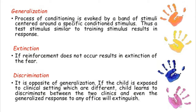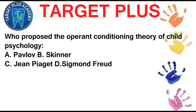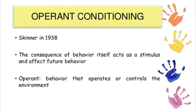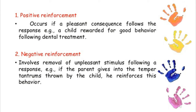Operant conditioning theory of child psychology was given by Skinner, while Pavlov gave the classical conditioning theory. Operant conditioning is the use of consequences to modify the occurrence and form of behavior. It occurs in four forms: positive reinforcement, negative reinforcement, omission, and punishment. Positive reinforcement occurs if a pleasant consequence follows the response. For example, following cooperative behavior in the dental clinic, the child is given a toy as a reward, making the child likely to behave well in future dental visits.